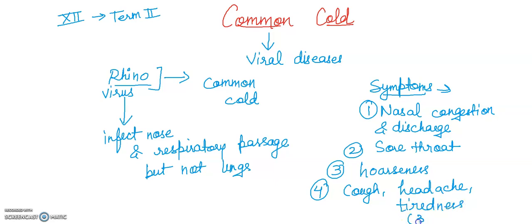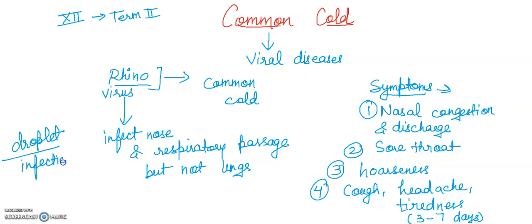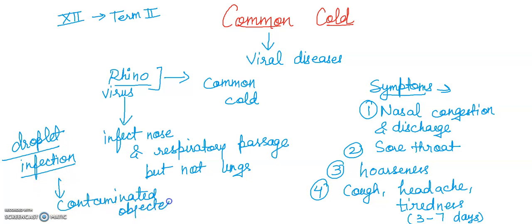These symptoms usually last for three to seven days. Droplets resulting from cough or sneezes of an infected person are either inhaled directly or transmitted through contaminated objects — it is a droplet infection. Contaminated objects may include pen, paper, books, cups, doorknobs, computer keyboards, and mice, and can cause infection in a healthy person.